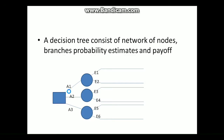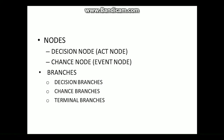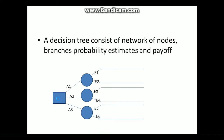The second element is branches. There are three types: Decision Branches, Chance Branches, and Terminal Branches. A decision branch starts from a decision node. A chance branch starts from a chance node. The terminal branch is the end of the branch in a decision tree — for example, E1, E2, E3, E4, E5, E6.